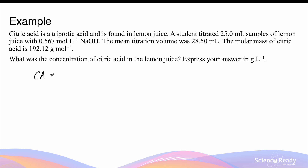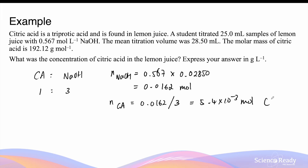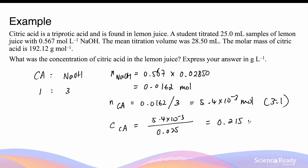The moles of sodium hydroxide is equal to 0.567 multiplied by the average titer volume of 0.02850 litres, which equals 0.0162 moles. Therefore, the moles of citric acid is 0.0162 divided by 3, which is 5.4 × 10⁻³ moles — due to the 3 to 1 ratio. The concentration of citric acid in lemon juice is then 5.4 × 10⁻³ moles divided by the volume of lemon juice, 0.025 litres, giving 0.215 mol per litre.